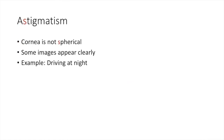Astigmatism occurs when the front of the cornea may be more egg-shaped than spherical. Some images appear clearly defined whereas others appear blurred. The symptoms of astigmatism include blurred vision, sensitivity to light, eye discomfort such as eye strain and fatigue, headaches, and difficulty seeing when driving at night — everything seems blurry, and objects appear a little out of focus.